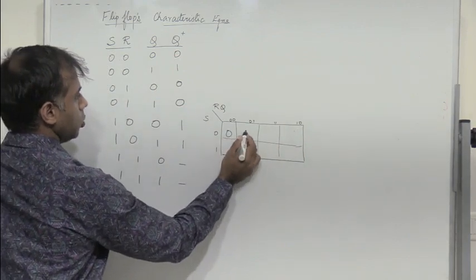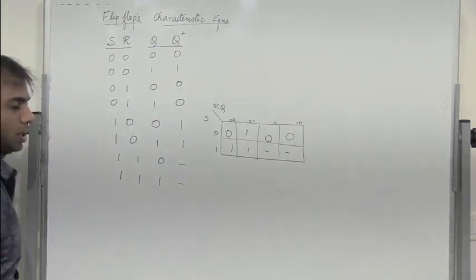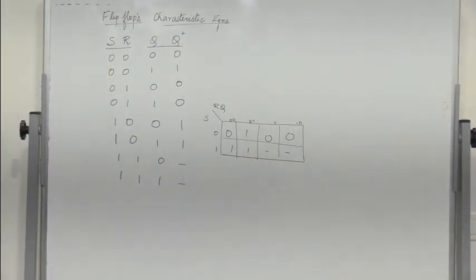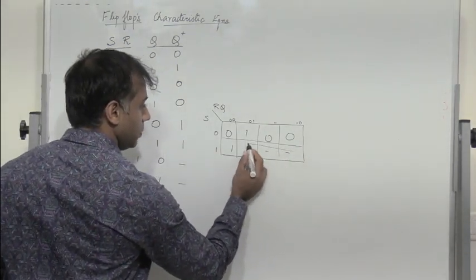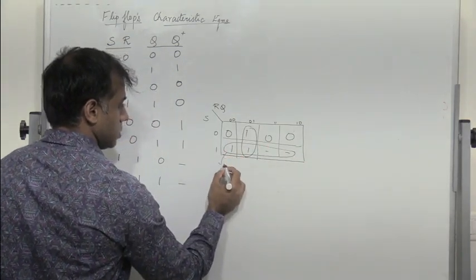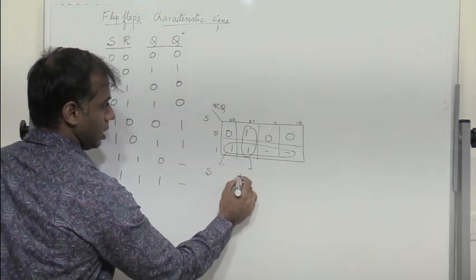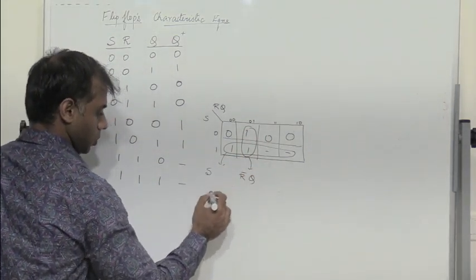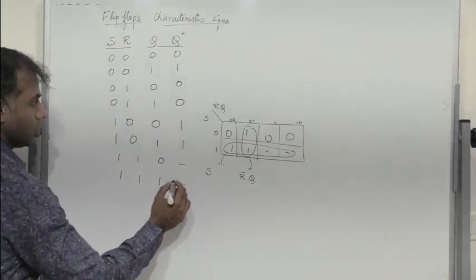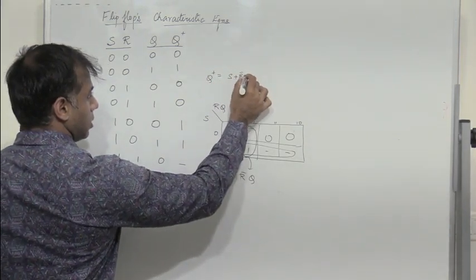The states are: 0, 1, 0, 0, and 1, 1, undefined. Since the output is undefined for the S=1, R=1 combinations, we treat them as don't cares. Combining the appropriate groups — four cells and a pair — we get S for one group and R̄Q for the other pair. Therefore Q+ = S + R̄Q.